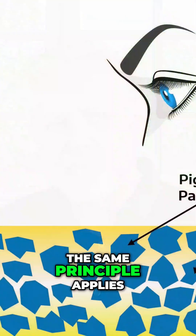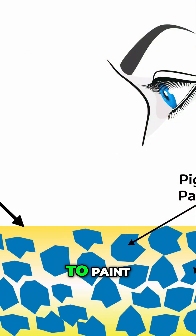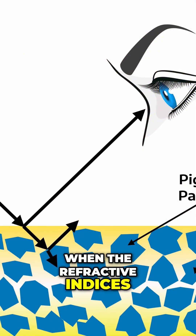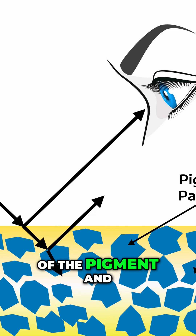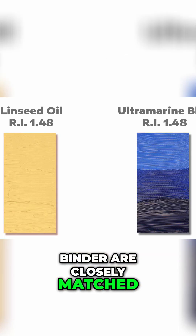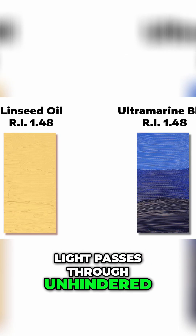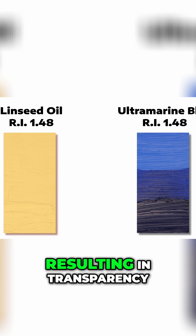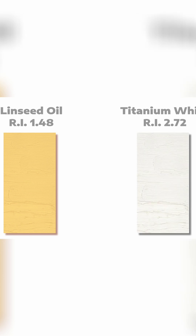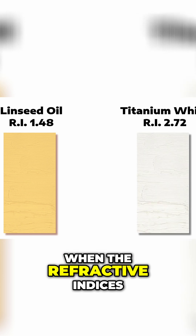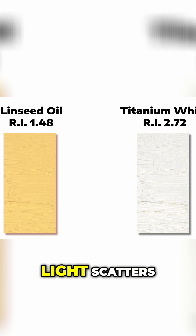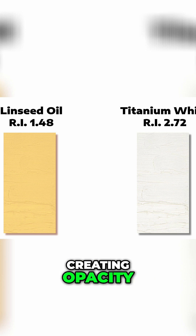The same principle applies to paint. When the refractive indices of the pigment and binder are closely matched, light passes through unhindered, resulting in transparency. However, when the refractive indices differ significantly, light scatters, creating opacity.